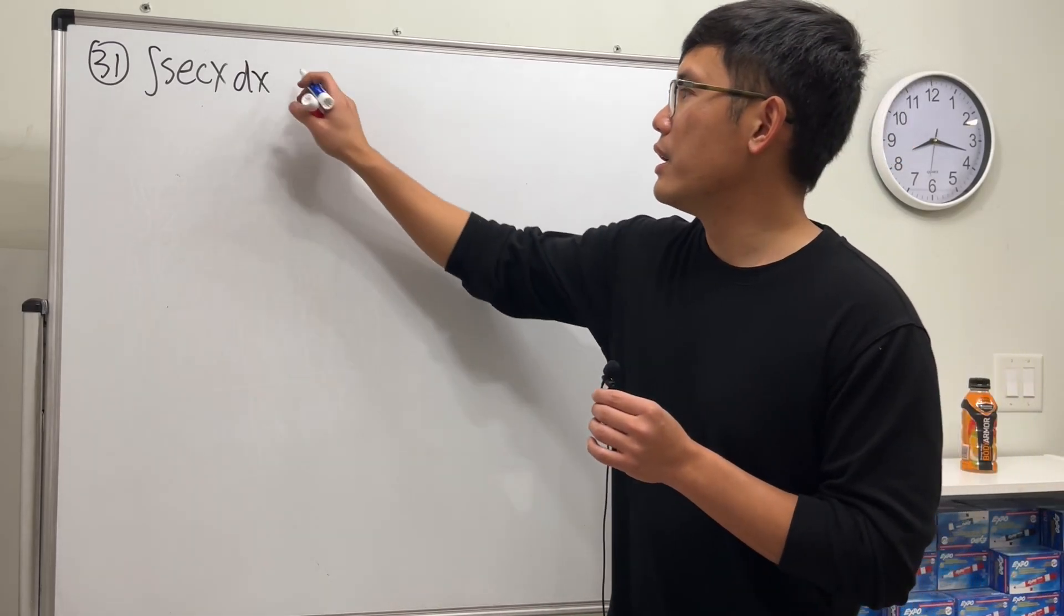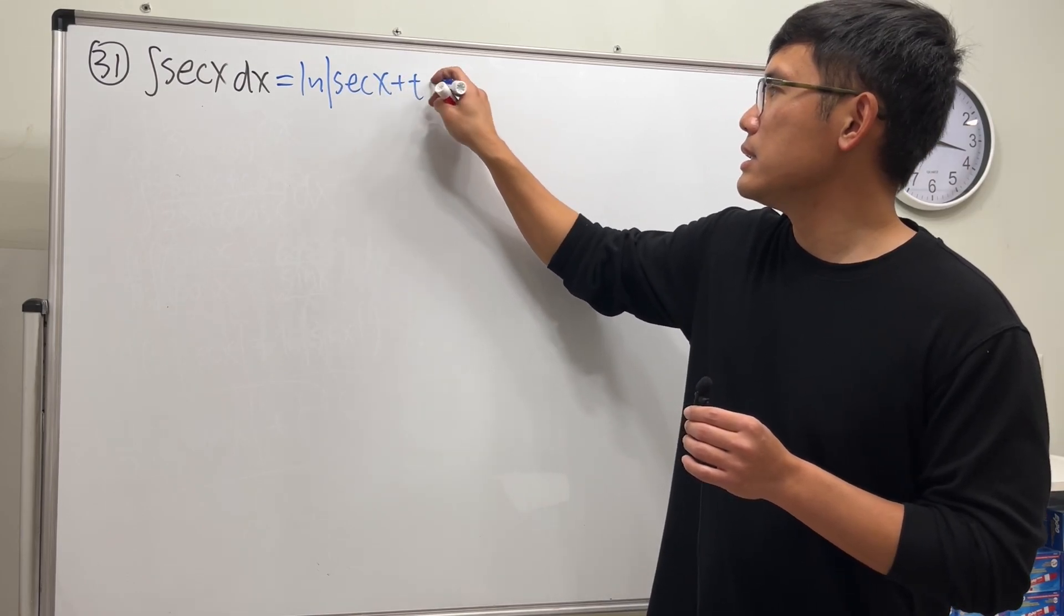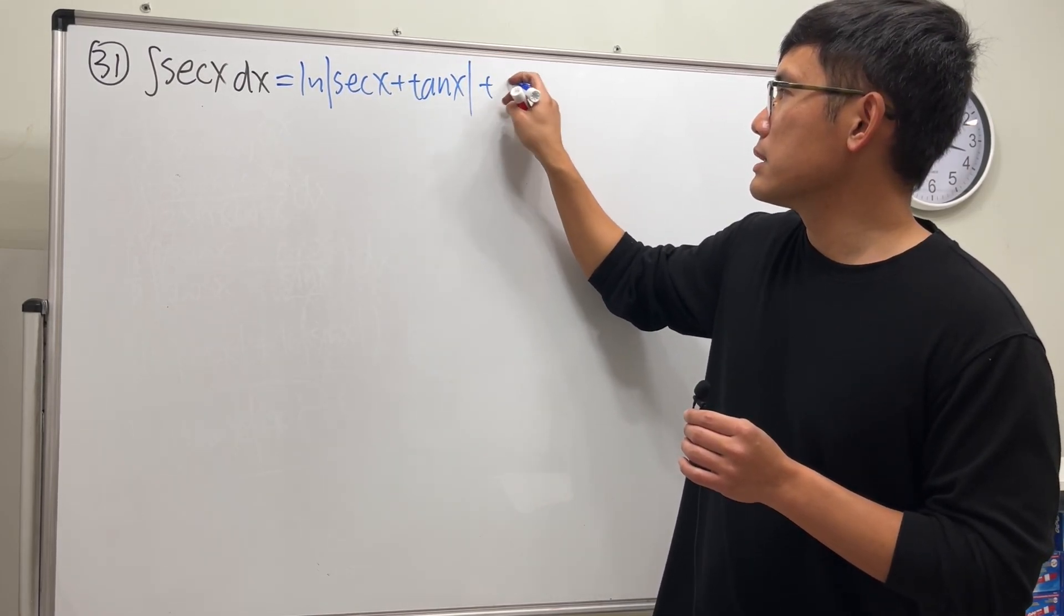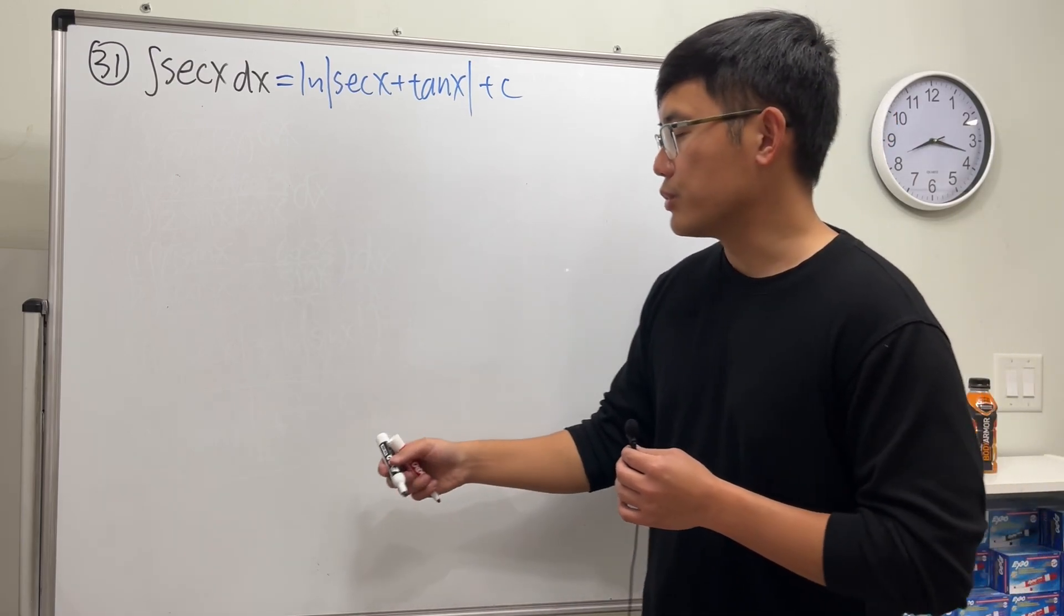The standard result for this right here is ln absolute value of secant x plus tangent x plus c, done. But here we'll be using the Weierstrass substitution.